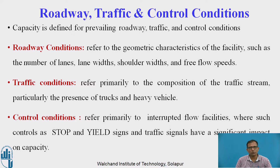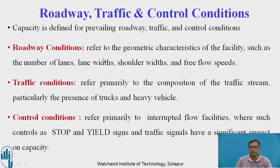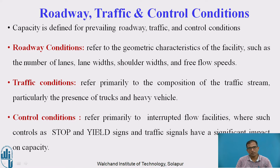Capacity is defined for prevailing roadway, traffic, and control conditions. Roadway condition refers to geometric parameters such as number of lanes, lane width, shoulder width, and free-flow speeds. Traffic condition refers to the composition of the traffic stream, particularly the presence of trucks and heavy vehicles. Control conditions refer to interrupted flow facilities such as stop and yield signs and traffic signals.